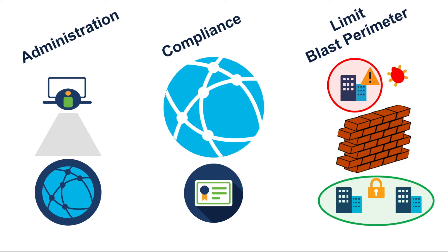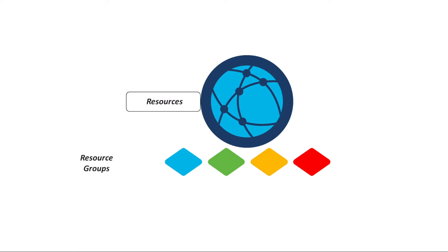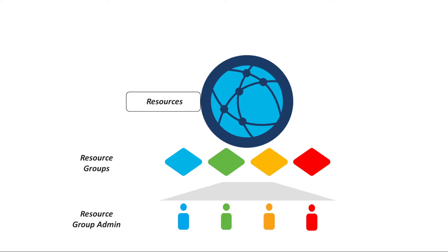The question is: how can we overcome these challenges? This is where the RBAC-based resource groups feature comes in. It classifies system resources into different groups, each administered by its own admin for day-to-day operations while a global admin can oversee the entire network. This simplifies network administration, restricts the blast perimeter to a specific group, and helps meet compliance requirements.